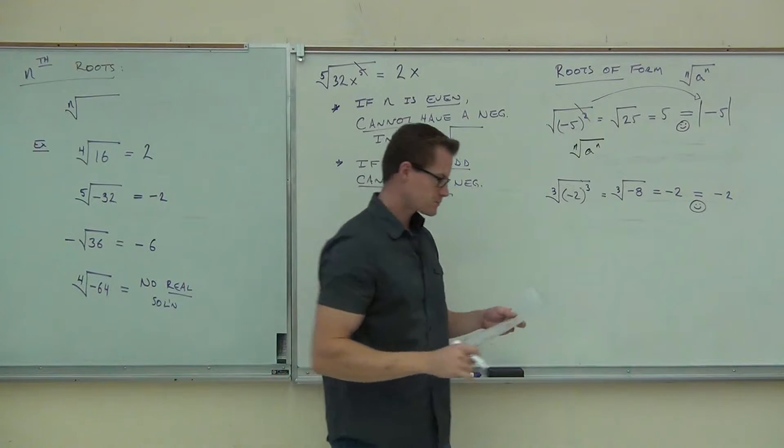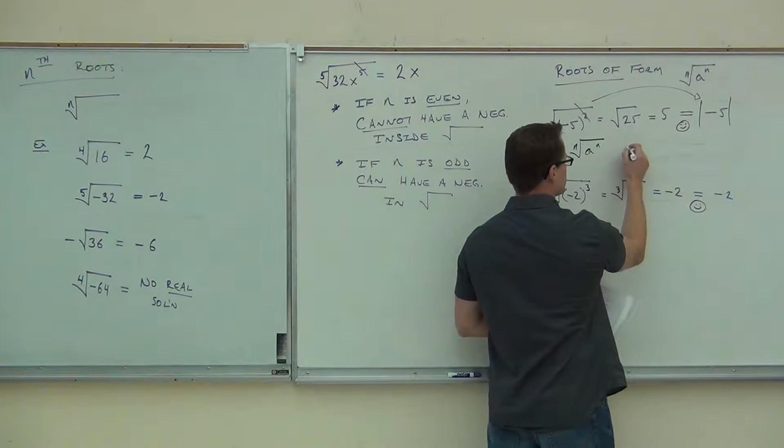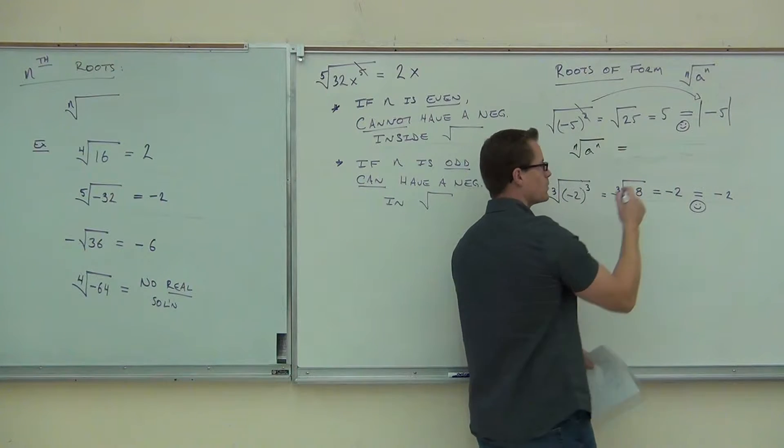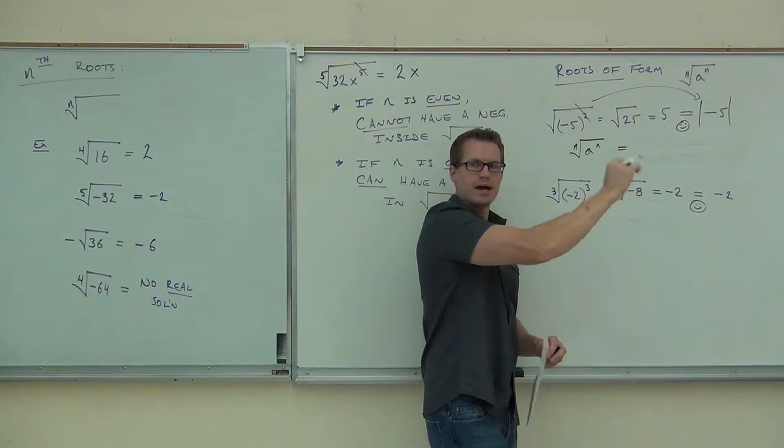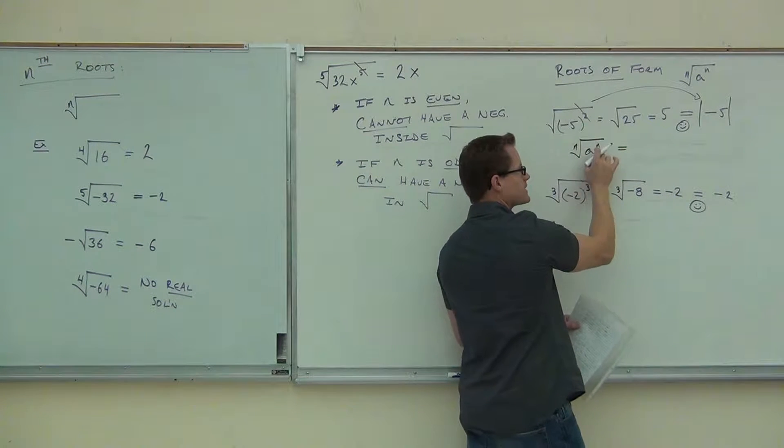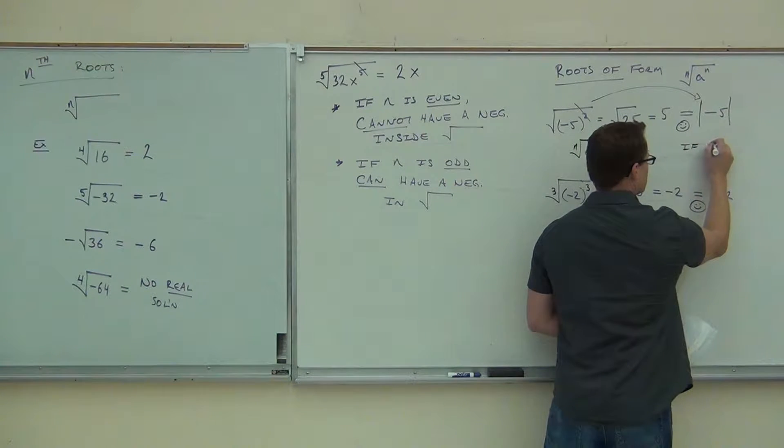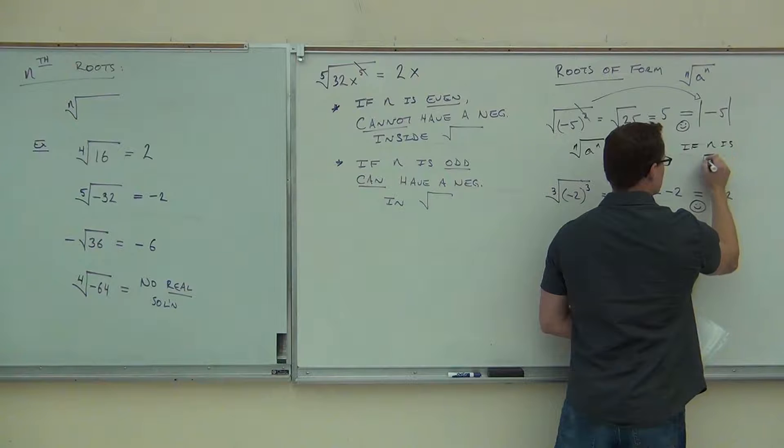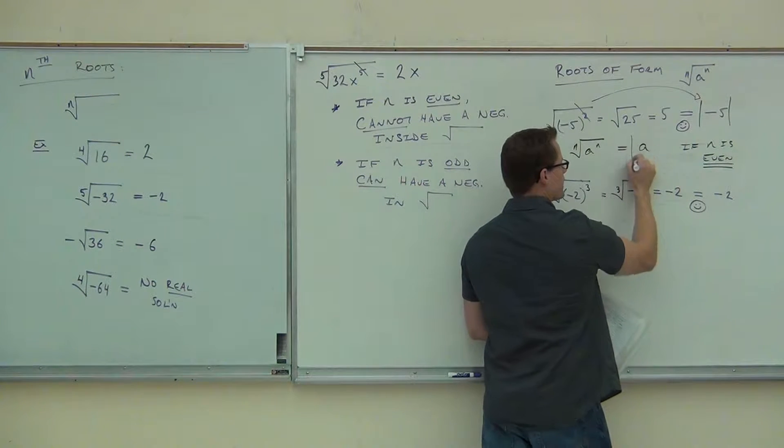If n is even, like it is here, what this is going to equal is you're still going to be able to cross things out. An nth root still matches with an nth power, they still match up. However, if n is even, what you're getting is not just a, we're getting the absolute value of a.